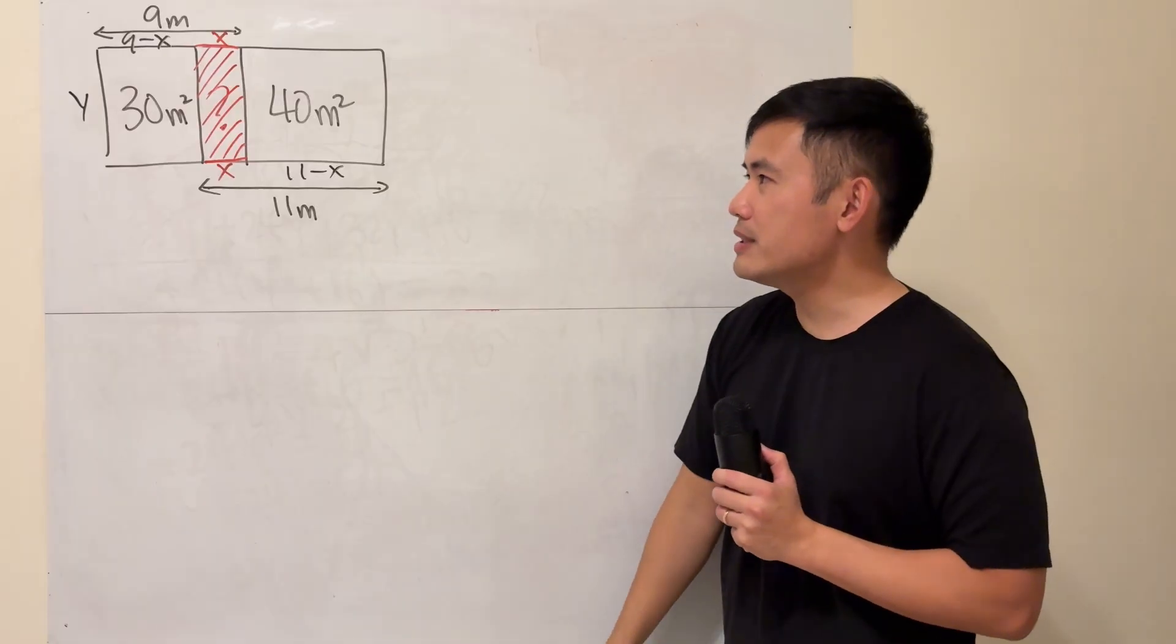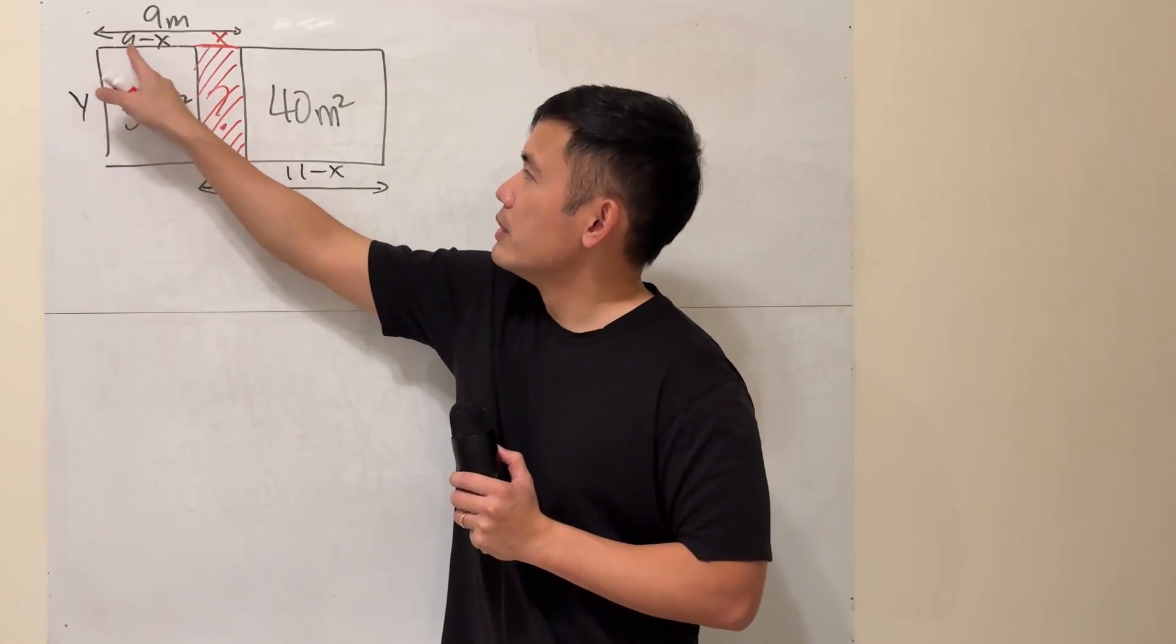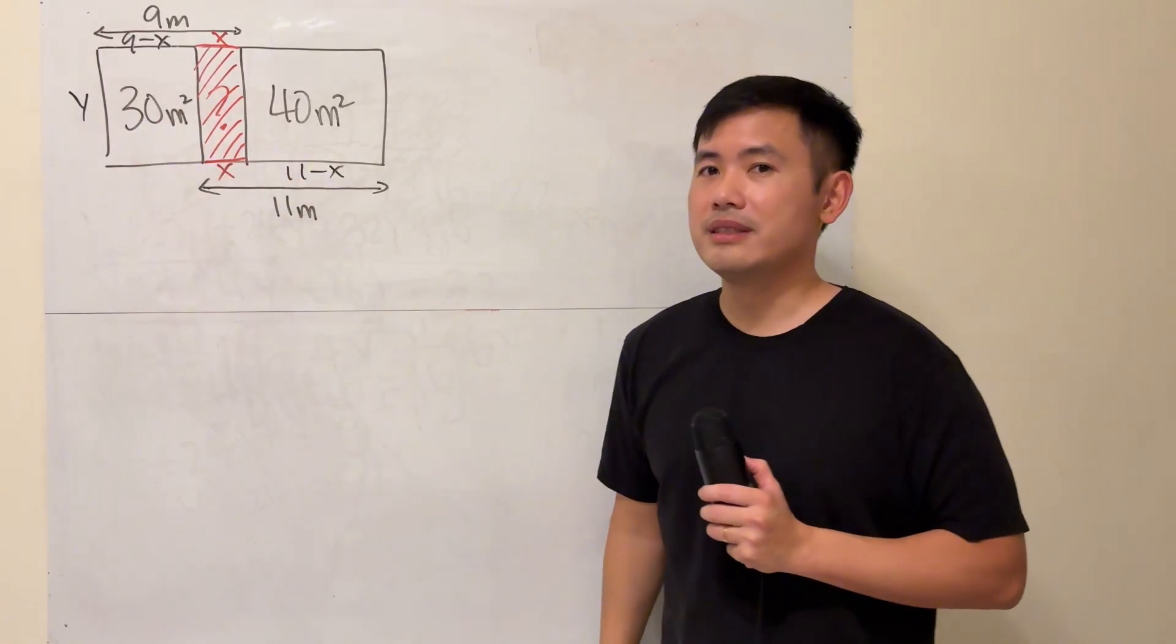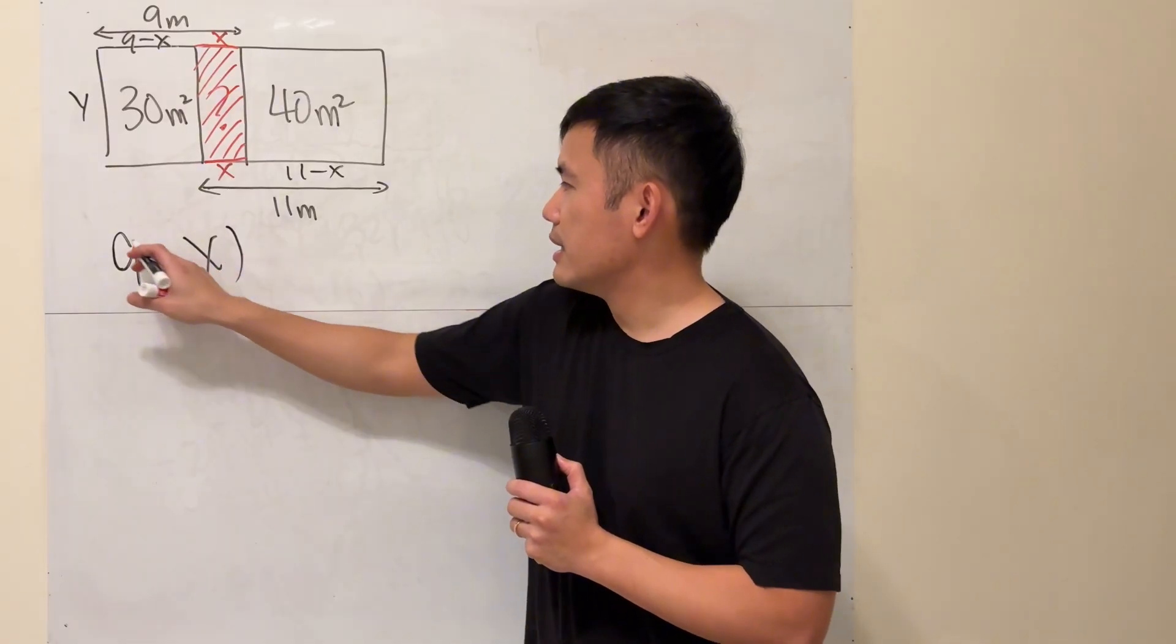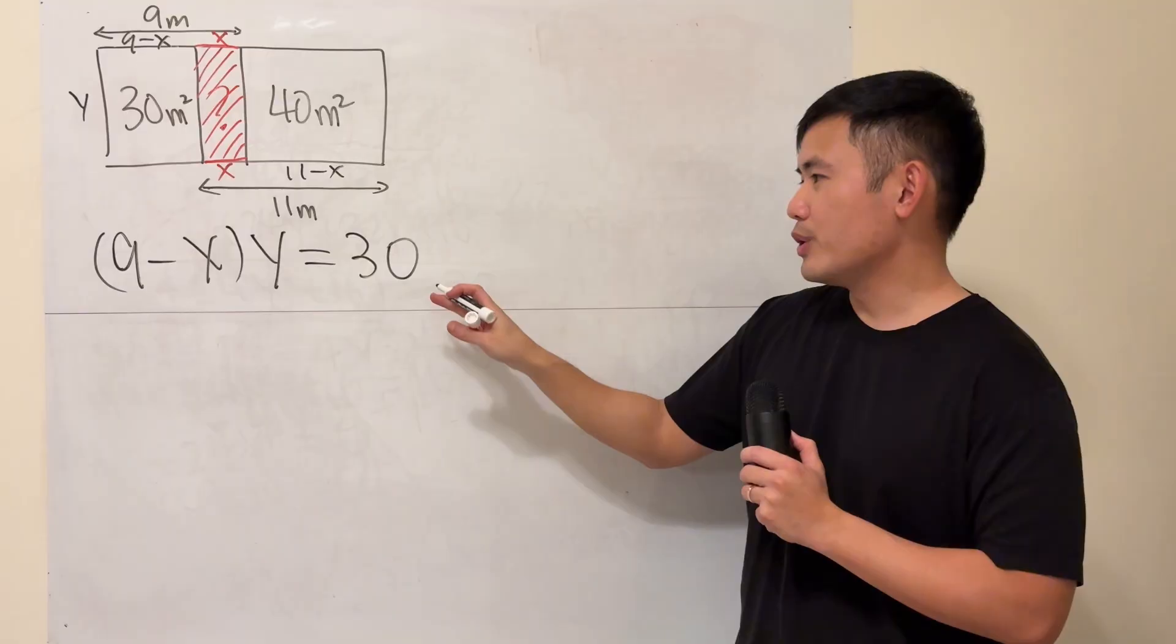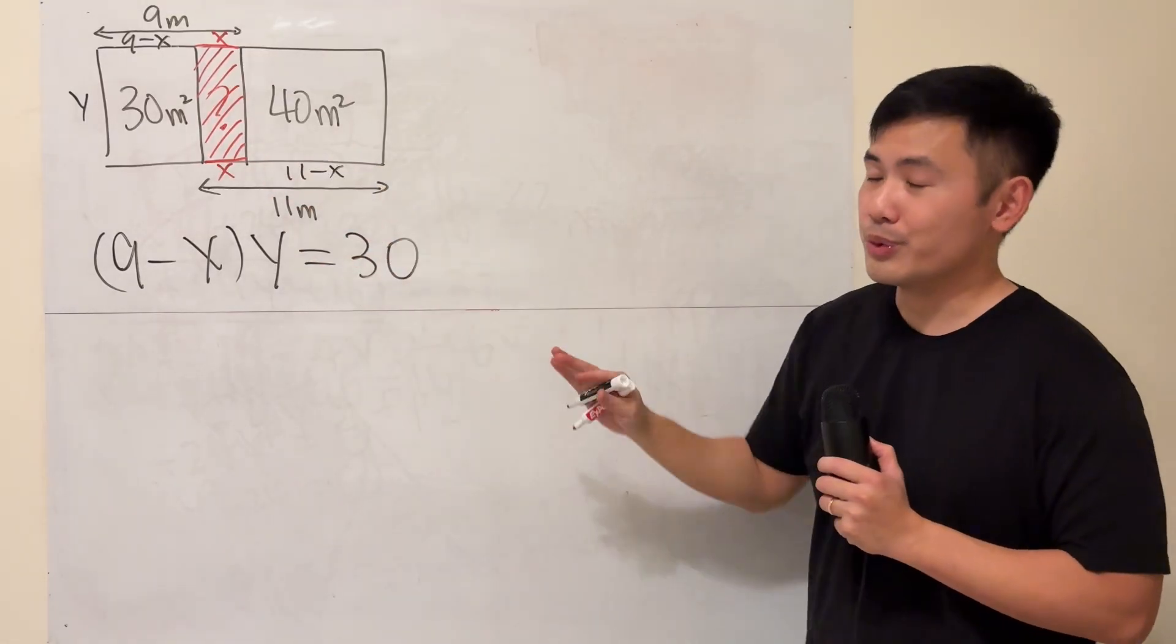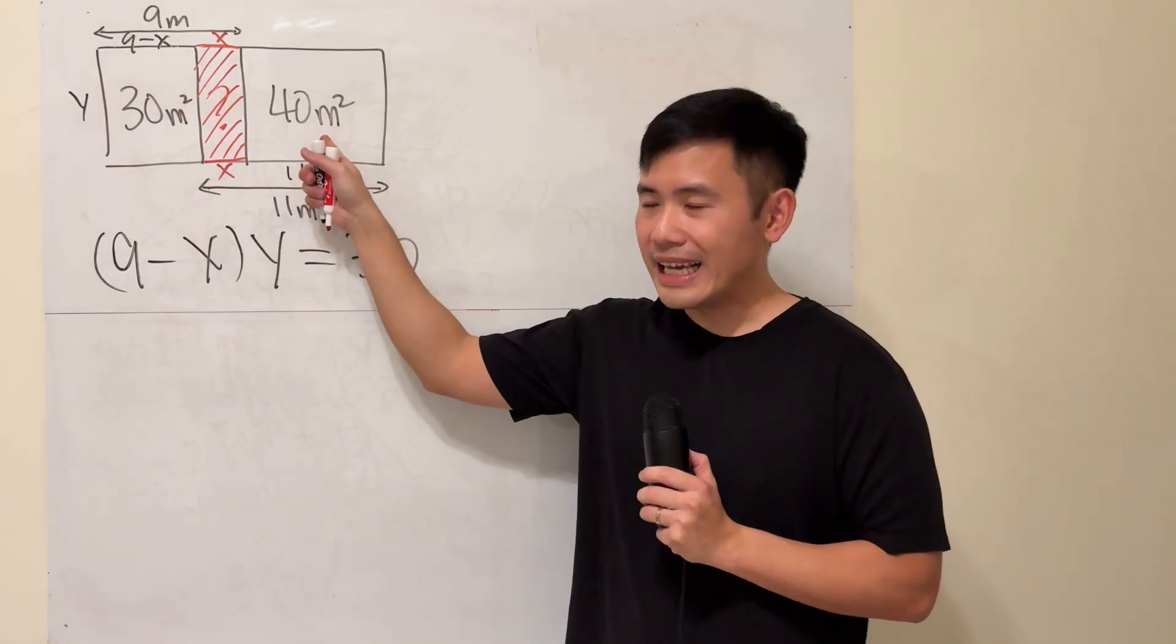to set up a nice system of equations. From here, (9-x), this length times this width, must be this area, which is 30 meters squared. So I'll say (9-x) times y equals 30. We ignore the units when we do computations, and all the units agree, so you don't have to worry about that. Now do the same thing for this rectangle.